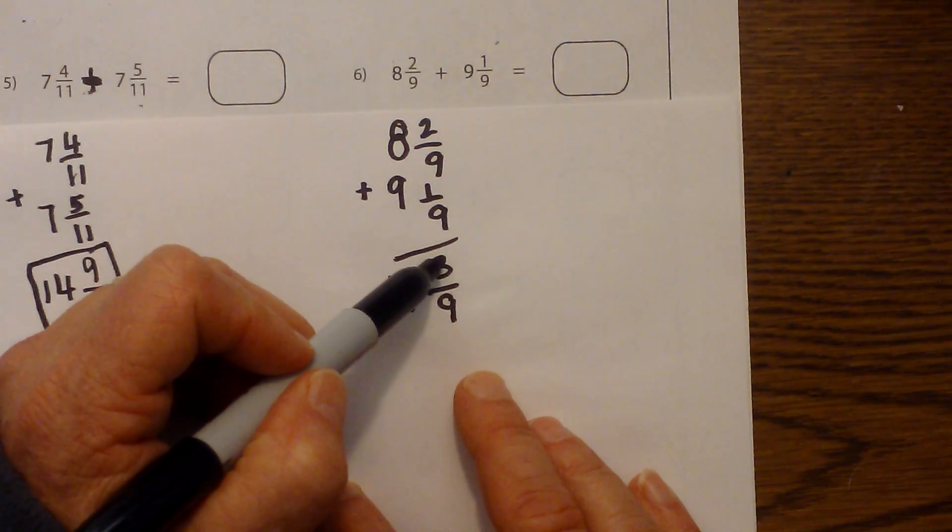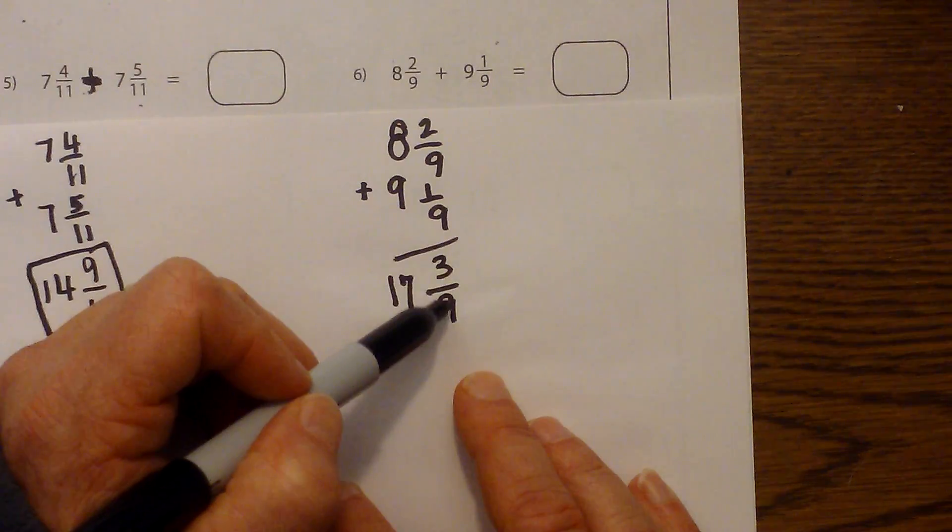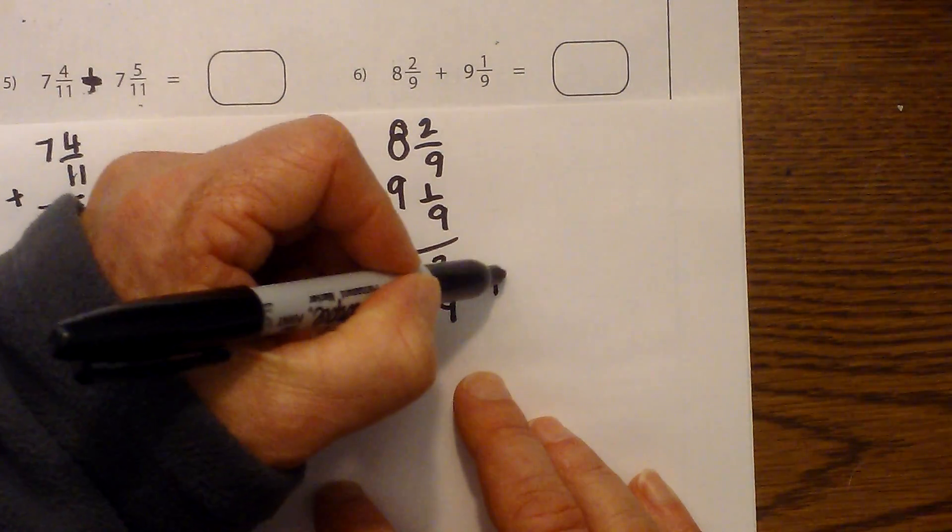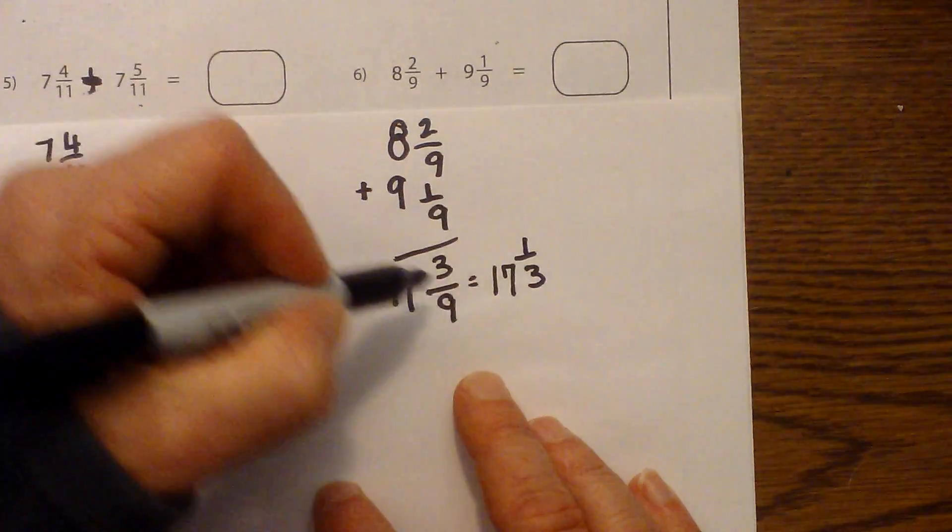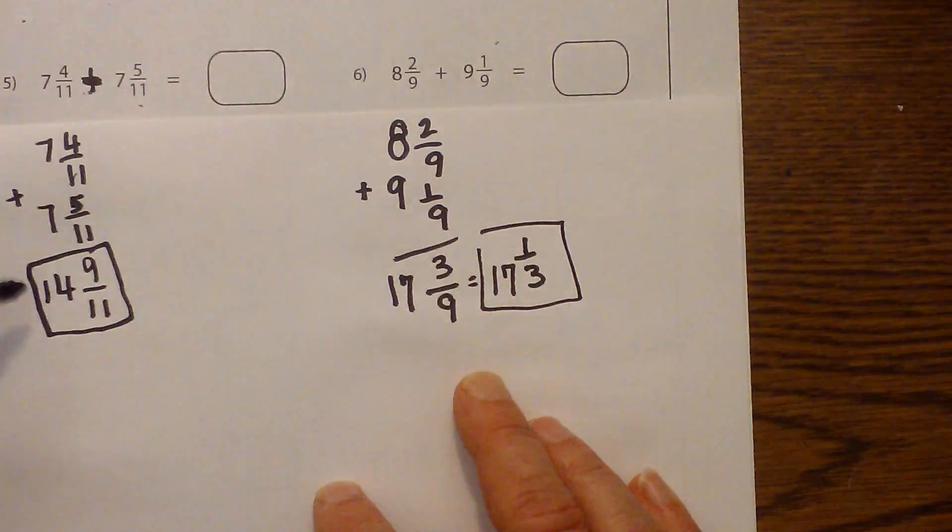Now I can reduce 3 ninths because 3 will go into 3 and 3 will go into ninths. So that will equal 17 and 1 third. And I'll go ahead and box that.